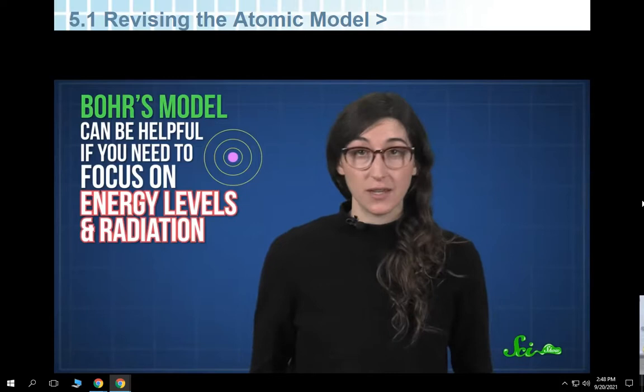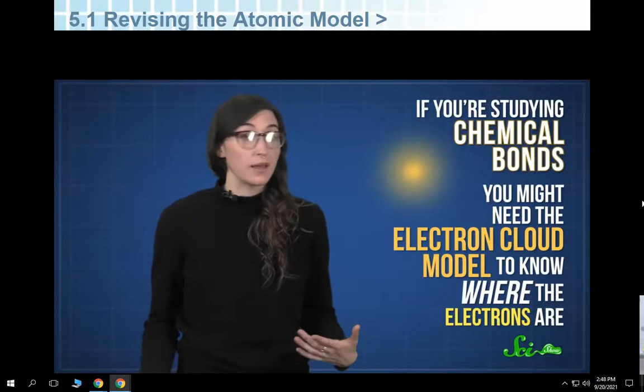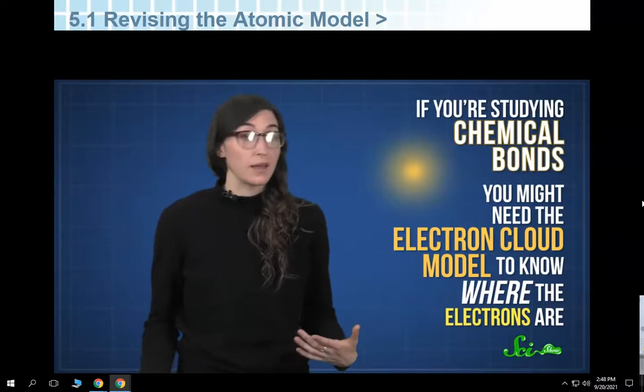The electron cloud model is the most up-to-date model and is used by scientists around the world. But that doesn't make the other models useless. Bohr's model is helpful for focusing on energy levels and radiation, while the electron cloud model is needed for studying chemical bonds. And if you want a model that shows the fundamentals and still looks cool, you might go for the planetary model.